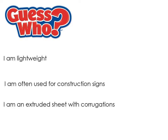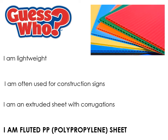This material is very lightweight, often used in construction signs, and it's an extruded sheet. Extrusion produces a consistent cross-section with corrugations — a kind of zigzag pattern. It's fluted polypropylene sheet. Polypropylene has amazing fatigue resistance, meaning it can be bent back and forth without breaking. So this material can be scored and cut, but when not being worked it has excellent rigidity and is waterproof, making it great for construction signs that won't degrade or rot.